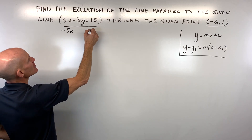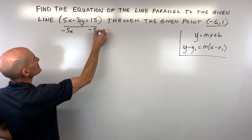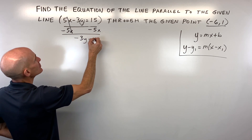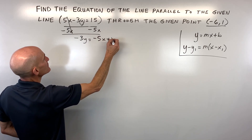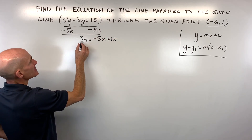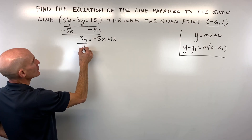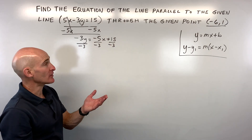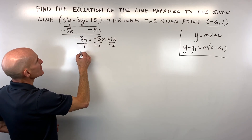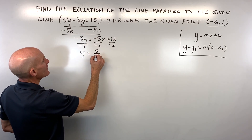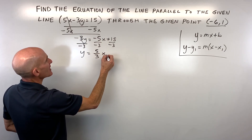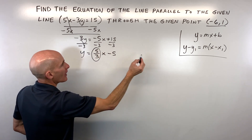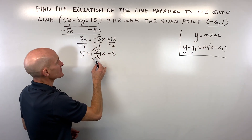Let's go ahead and subtract 5x from both sides. That gives us negative 3y is equal to negative 5x plus 15, and to get y by itself, let's divide all the terms on both sides by negative 3 to keep it balanced. That comes out to y equals 5 thirds x minus 5. The slope, our m value, is 5 thirds.